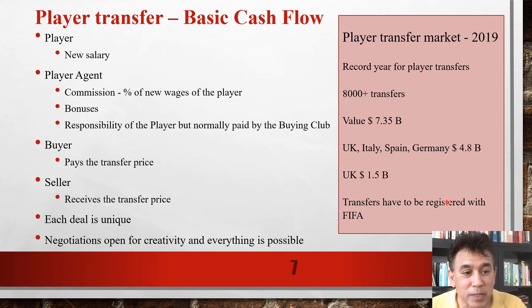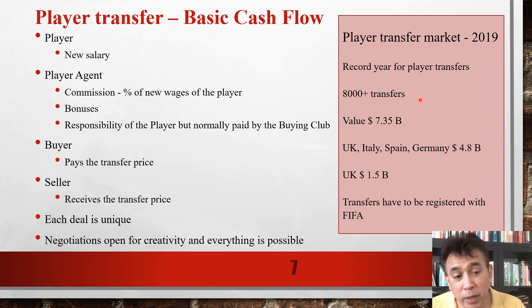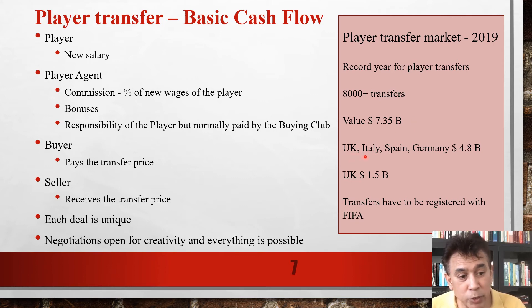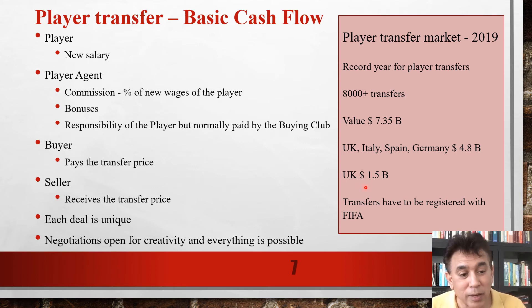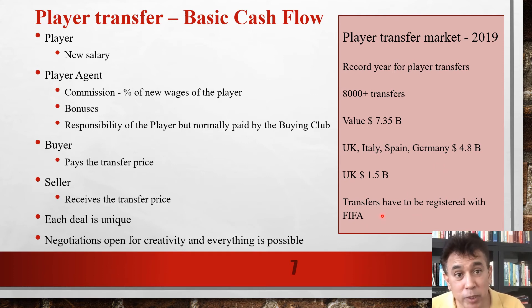As far as the transfer market is concerned, 2019 was a record year for player transfers. Worldwide, there were more than 8,000 player transfers for a total value of $7.3 billion. The biggest transfer markets were the UK, Italy, Spain, and Germany, where the biggest leagues are. Transfer volume totalled $4.8 billion, with the UK involved in the highest amount at $1.5 billion. All transfers have to be registered with FIFA, so this data is fairly readily available.